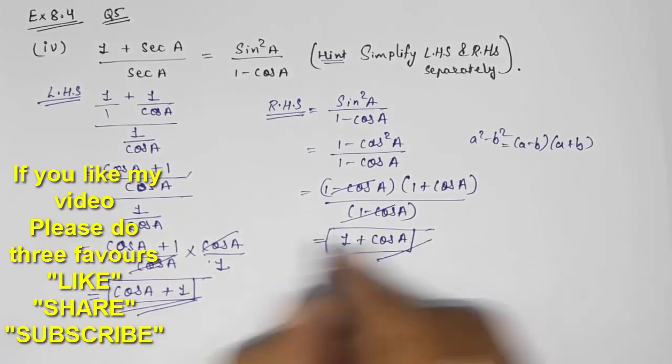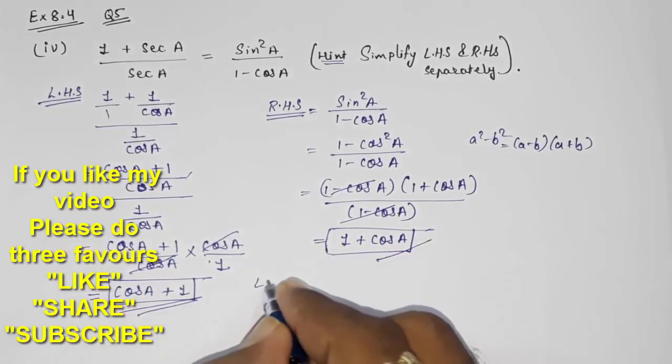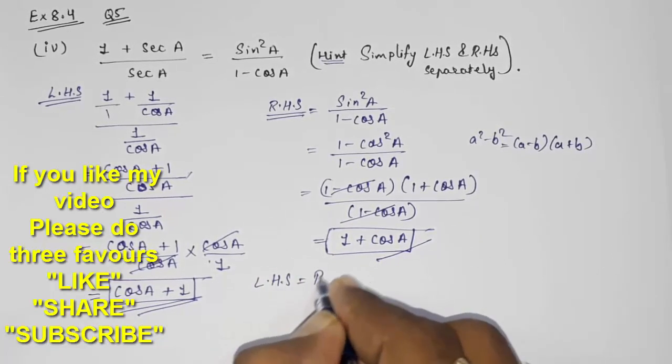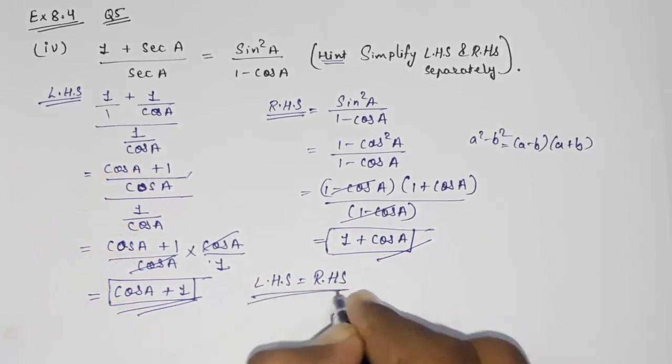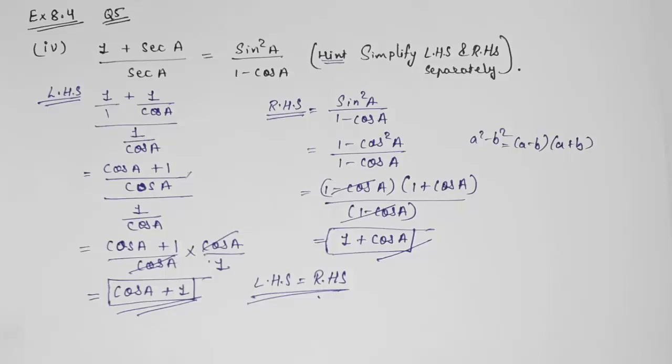So here LHS and RHS are same, therefore we can say LHS is equal to RHS. So this way we can solve this sum. Thank you so much for watching my video. If you like it, please subscribe to my channel. Thank you so much.